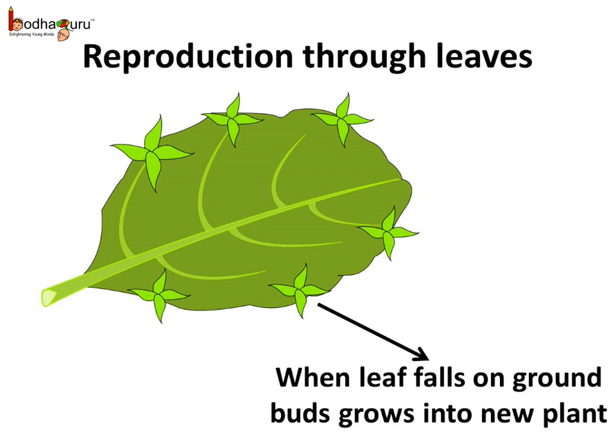Certain plants reproduce through their leaves. For example, the bryophyllum leaves develop small buds on their margins. These buds grow into new plants when the leaves fall from the parent plant.